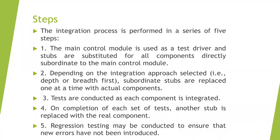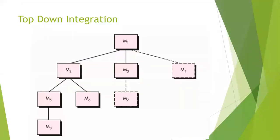Steps in top-down integration: first, consider the main control module as a driver. Then stubs are substituted for all components directly subordinate to the main control module. Depending on the approach selected, subordinate stubs are replaced with actual components. After completing all tests, replace stubs with real components, then conduct regression testing. In the picture, M1 acts as driver; M2, M3, M4 act as stubs. After completion, M2 and M3 are converted back to modules, but M4 and M7 remain as stubs.